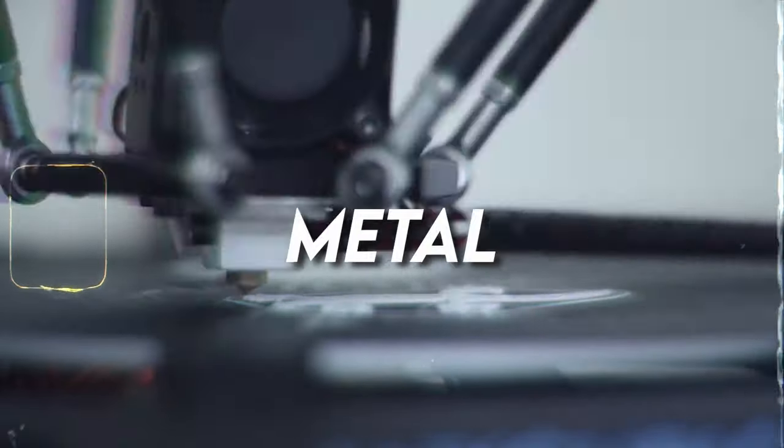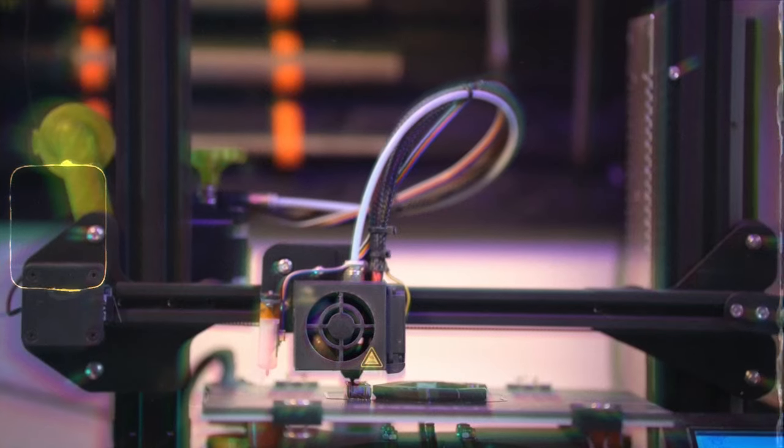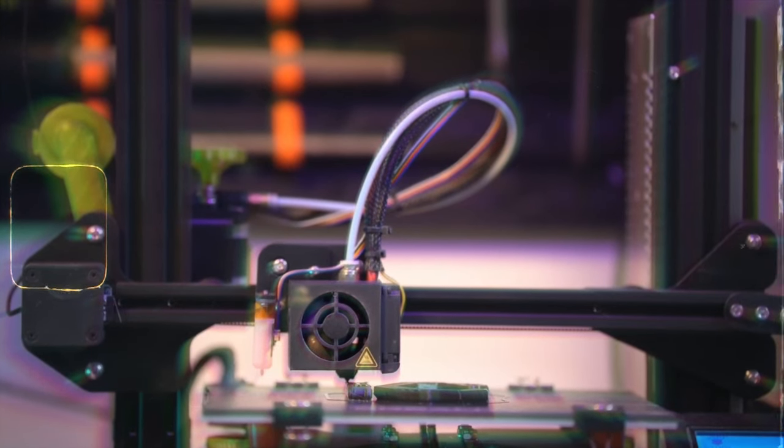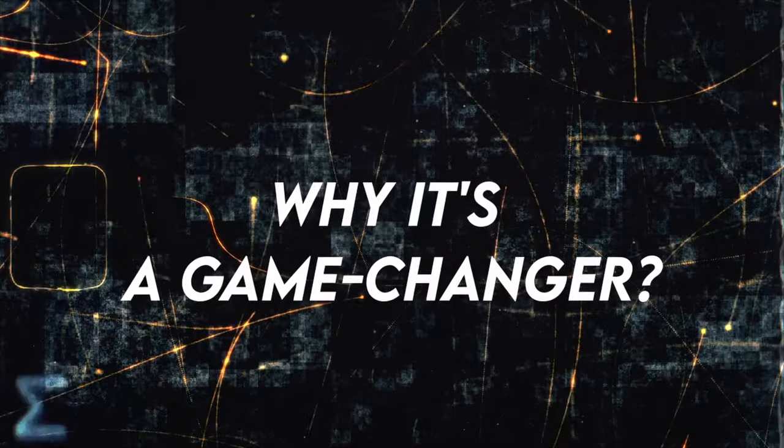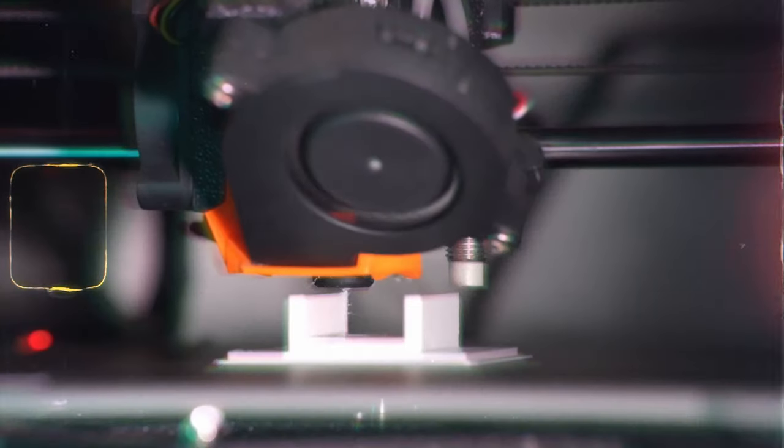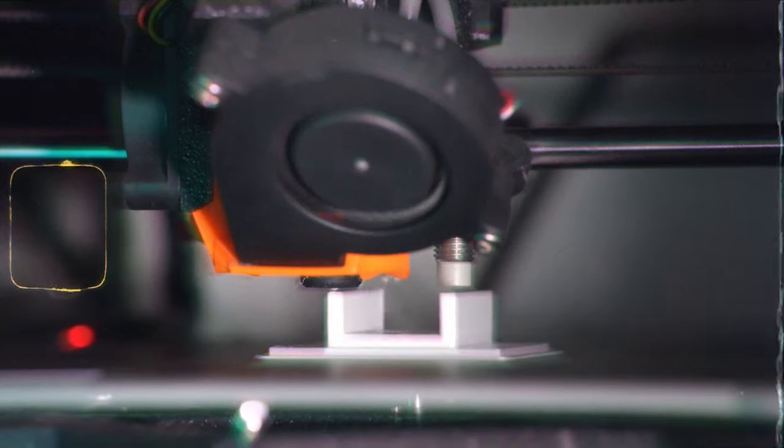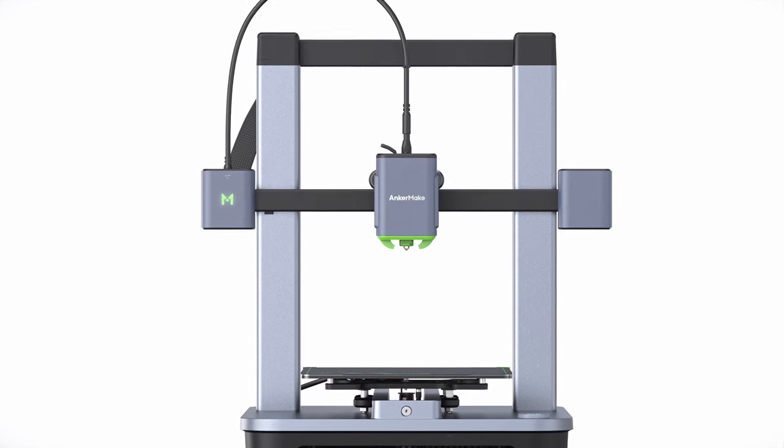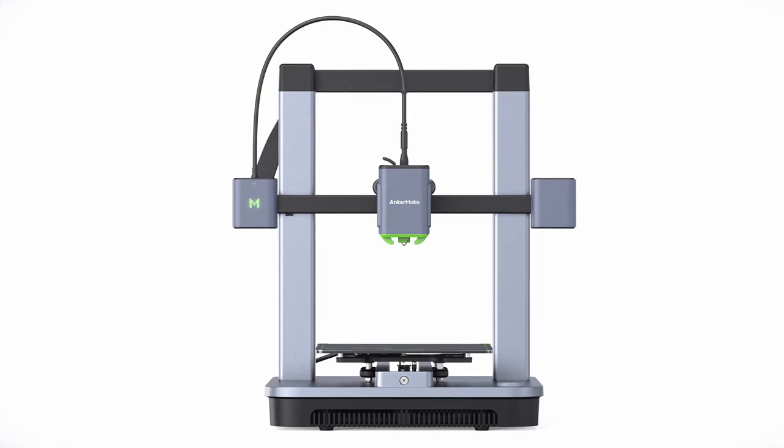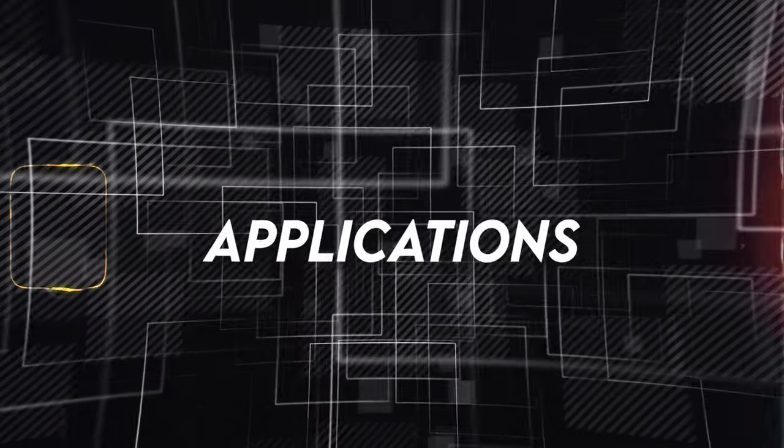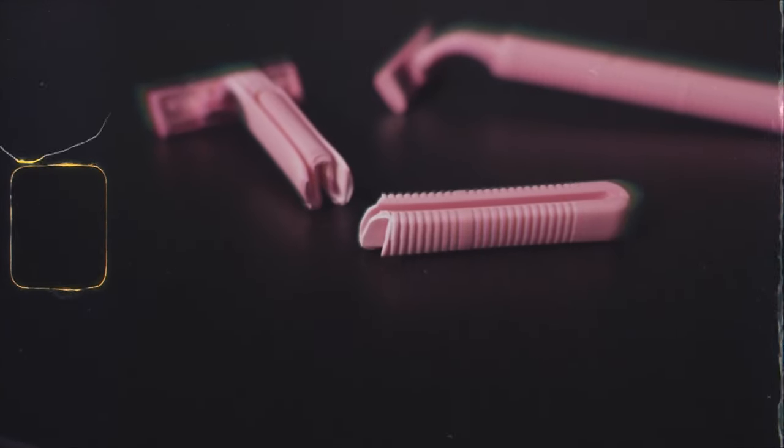Key features: Prints metal, plastic, and even organic materials. Includes a vast library of printable survival tools. Why it's a game-changer. The ability to create tools and parts on demand is invaluable in a survival situation. The NanoForge turns you into a one-person manufacturing plant.